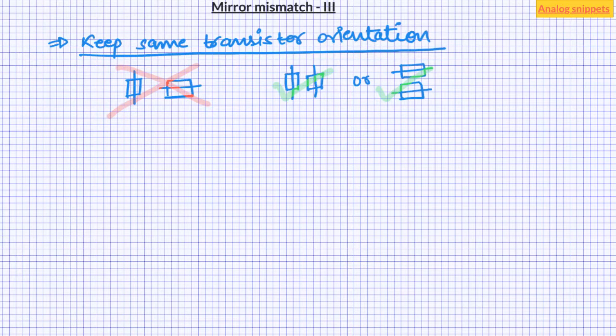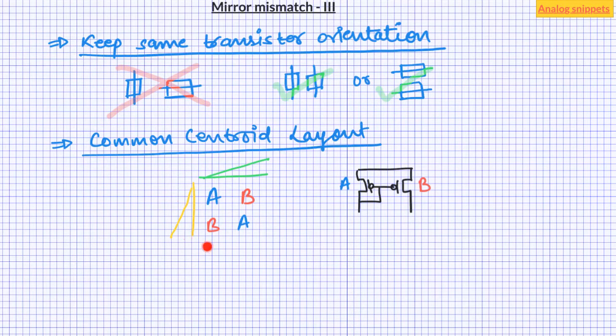The most common layout technique to achieve good mirror matching is to use common centroid geometry. So this is one example of common centroid layout where A and B are identical devices. The idea behind the common centroid geometry is to cancel out any linear gradient in transistor parameters. Many physical features during manufacturing process can have linear gradients such as gate oxide thickness or substrate doping.